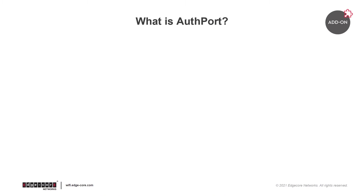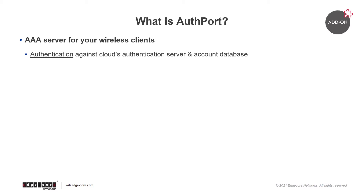So what is AuthPort? When you enable AuthPort, EC Cloud can now act as a AAA server for your wireless clients. First, authentication. You can control which wireless clients get to access the network by asking them to authenticate themselves. What's appealing about AuthPort is that you don't need to set up your own authentication server and account database, because they're already built into EC Cloud.